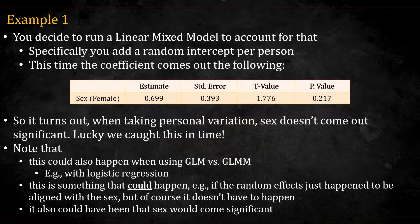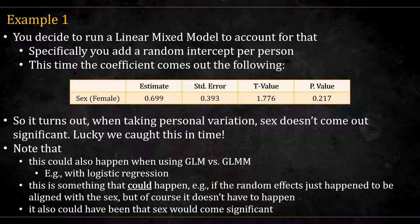So you now run a mixed model, and you add a random intercept per person. This time, the coefficient comes out with a larger standard error, and the p-value is insignificant. So it turns out that when taking personal variation, sex doesn't come out significant. Lucky we caught that on time.